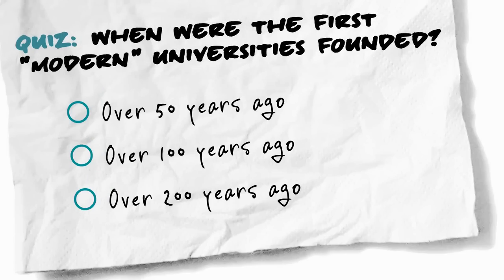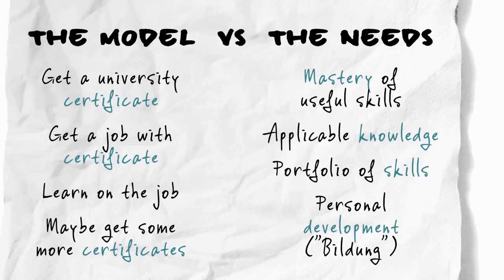The first modern university — one that tightly integrates research and teaching, aims at personal growth, and does research for the sake of research — how old is that? Actually 200 years. What's now called the Humboldt University in Berlin was the first of that style. So we're dealing with a pretty old model of university.